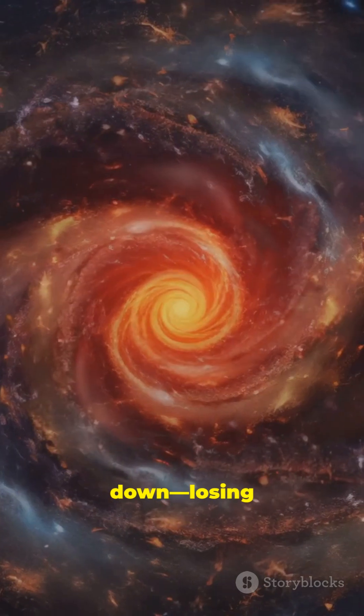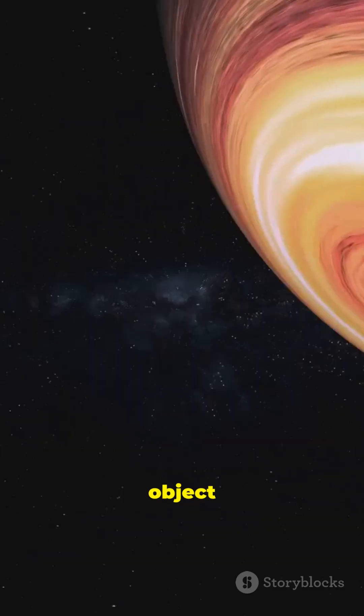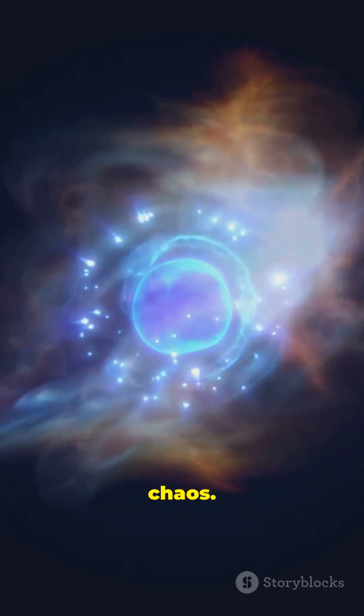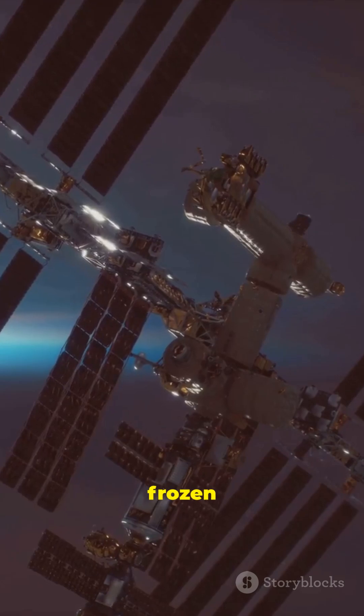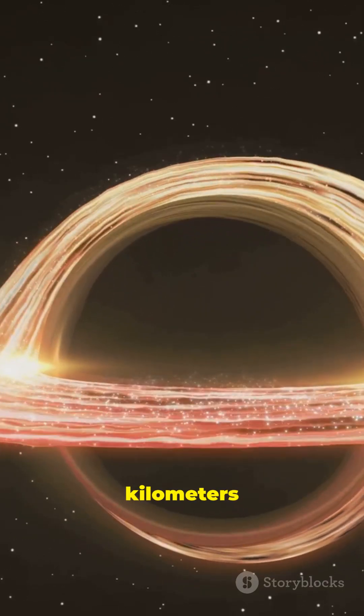And they still slow down, losing energy as waves and light. Tiny object, insane spin, total chaos. Even the space station looks frozen by comparison. All packed into about 20 kilometers across.